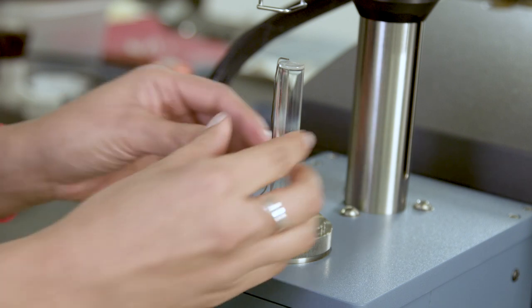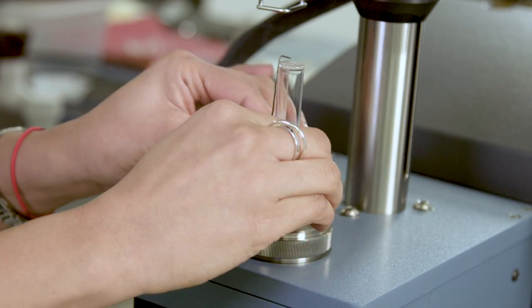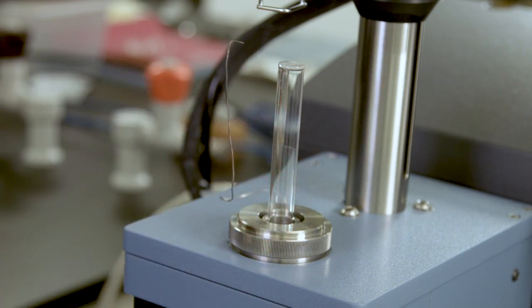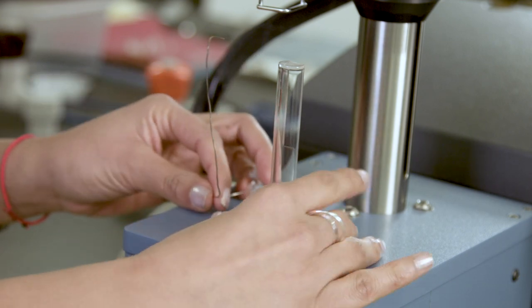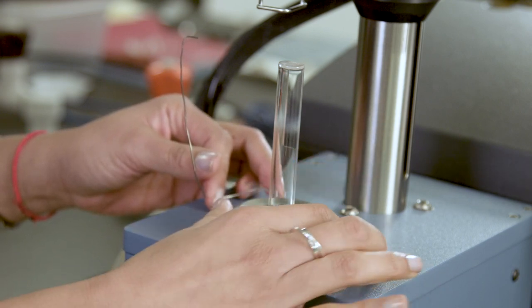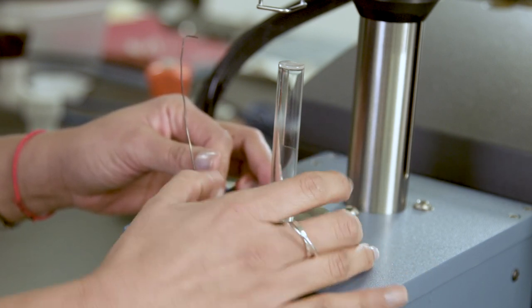Take off the spring clip that holds the sample thermocouple in place. Move the thermocouple off to the side. Unscrew the large stage nut counterclockwise and lift it straight up.